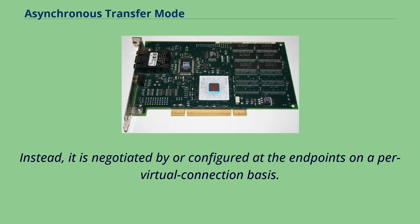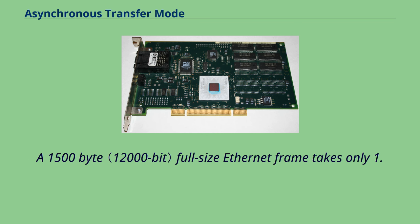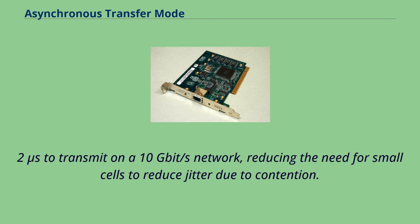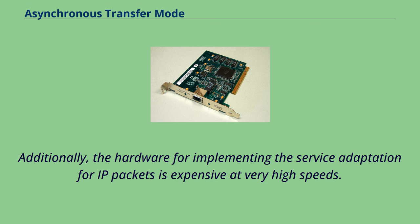Following the initial design of ATM, networks have become much faster. A 1,500-byte full-size Ethernet frame takes only 1.2 microseconds to transmit on a 10 gigabits per second network, reducing the need for small cells to reduce jitter due to contention. The increased link speeds by themselves do not alleviate jitter due to queuing. Additionally, the hardware for implementing service adaptation for IP packets is expensive at very high speeds.